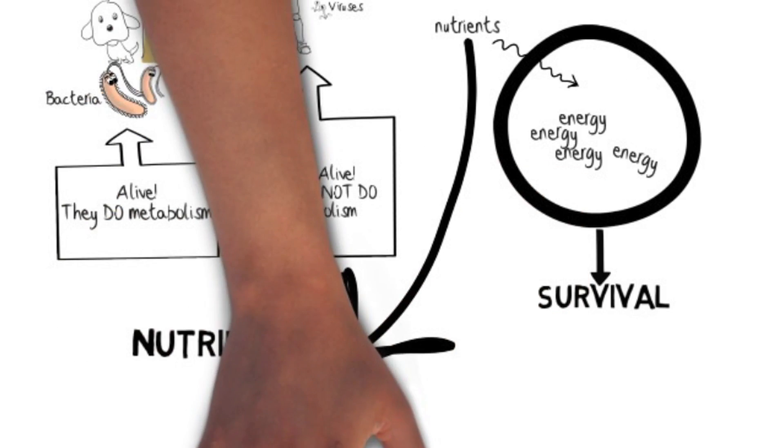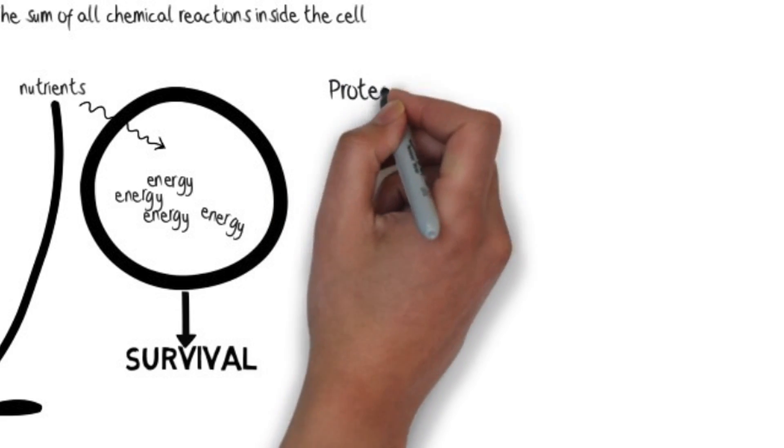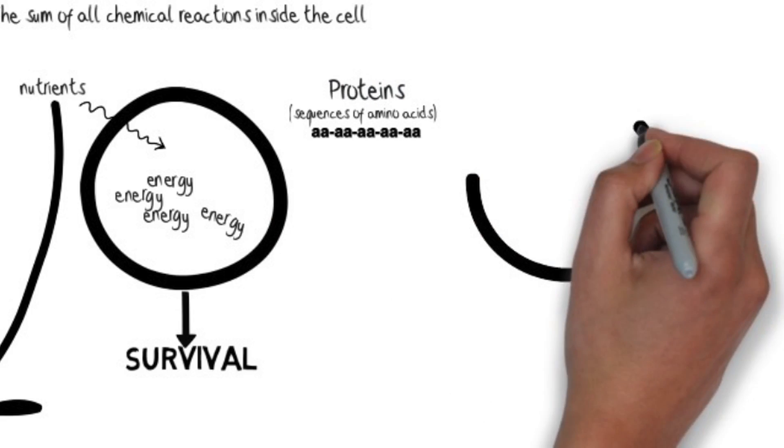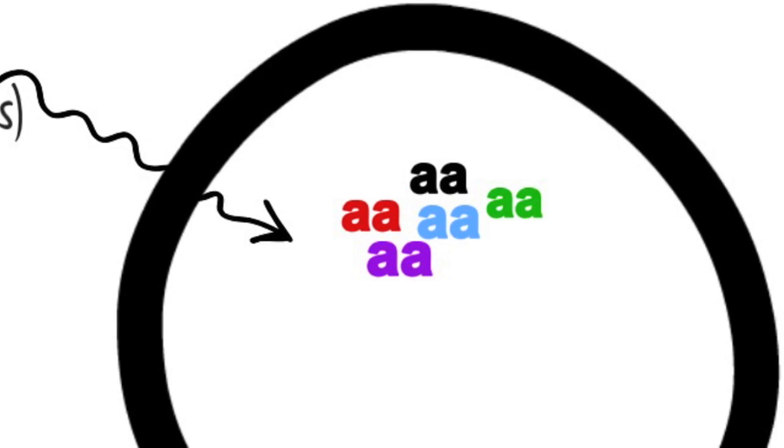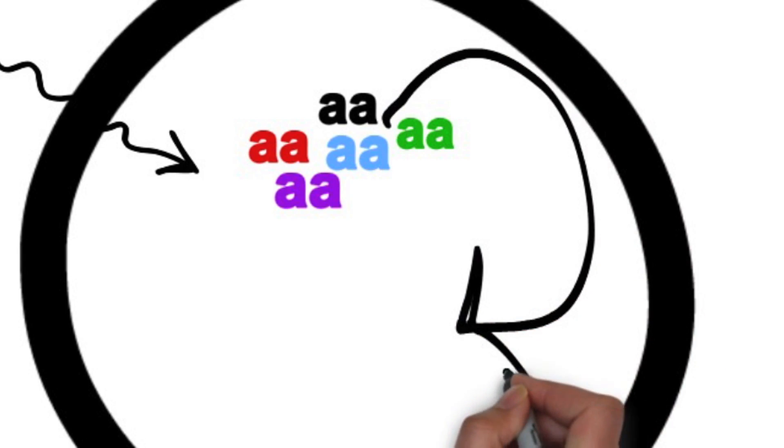Those nutrients come in combination of complex macromolecules. For example, one kind of nutrient could be proteins. Proteins are macromolecules made of smaller ones linked together. When a microorganism uses proteins as a nutrient, it must first break them down into those smaller molecules. Those smaller molecules can then be reassembled by the organism to make new proteins that the organism needs.